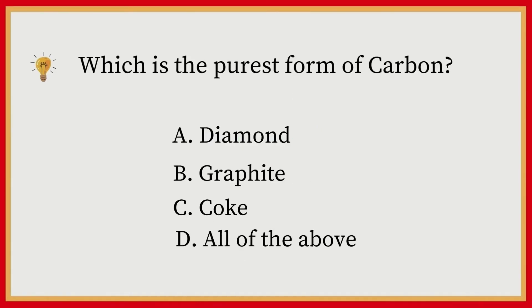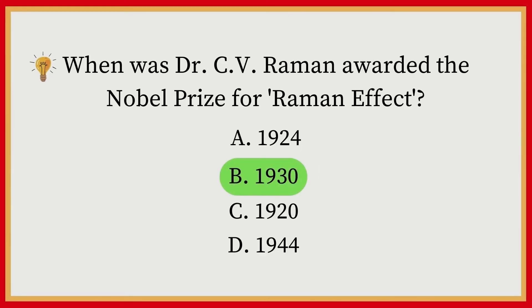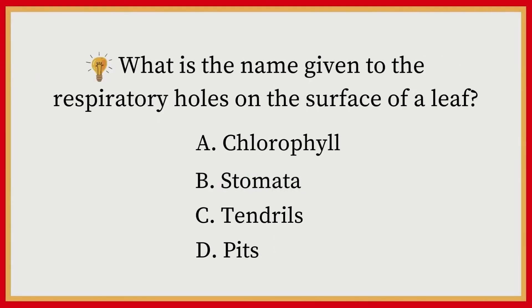Which is the purest form of carbon? A) Diamond, B) Graphite, C) Coke, D) All of the above. Answer: A, Diamond. When was Dr. CV Raman awarded the Nobel Prize for the Raman Effect? A) 1924, B) 1930, C) 1920, D) 1944. Answer: B, 1930. What name is given to the respiratory holes on the surface of a leaf? A) Chlorophyll, B) Stomata, C) Tendrils, D) Pits.